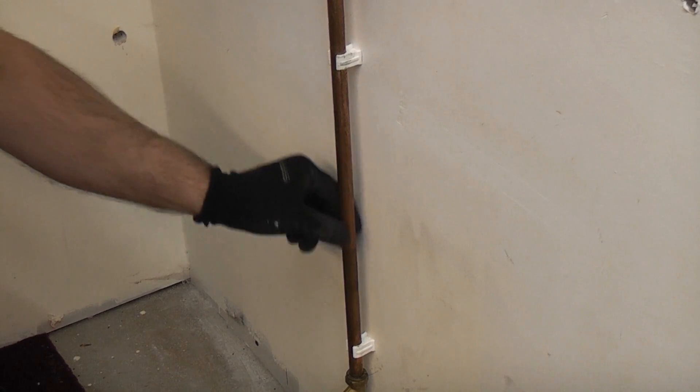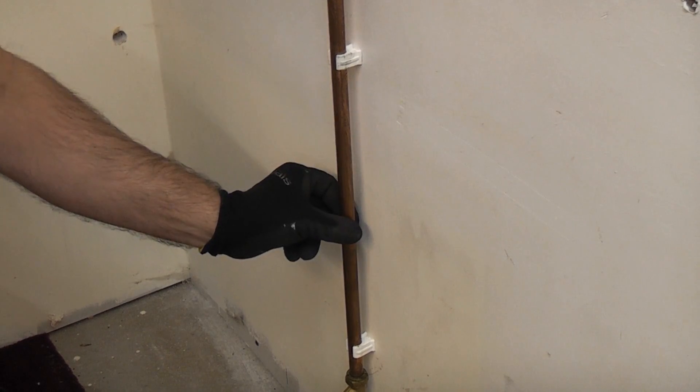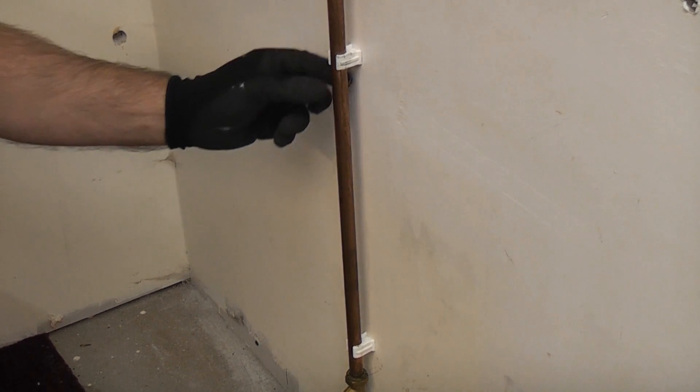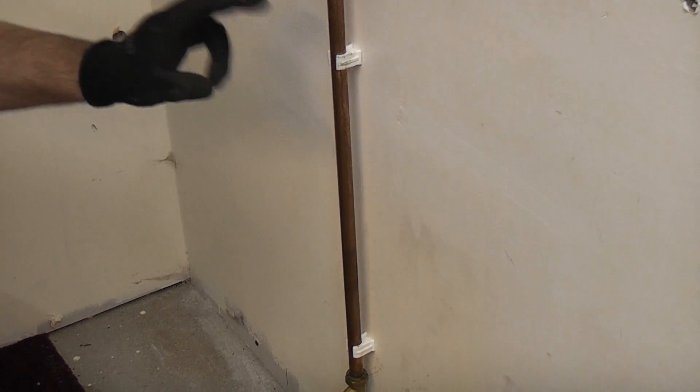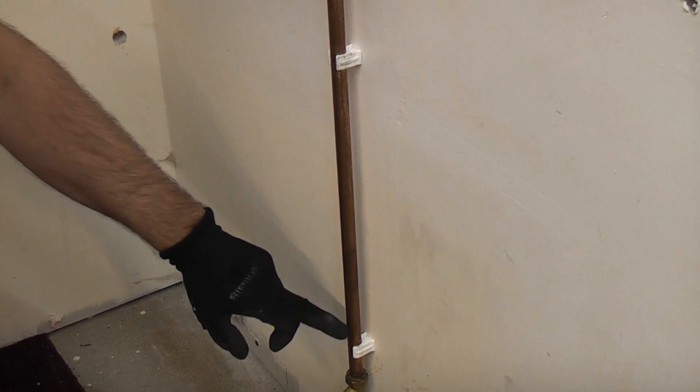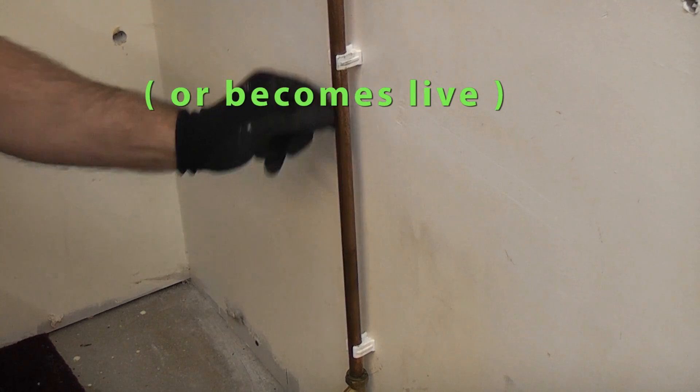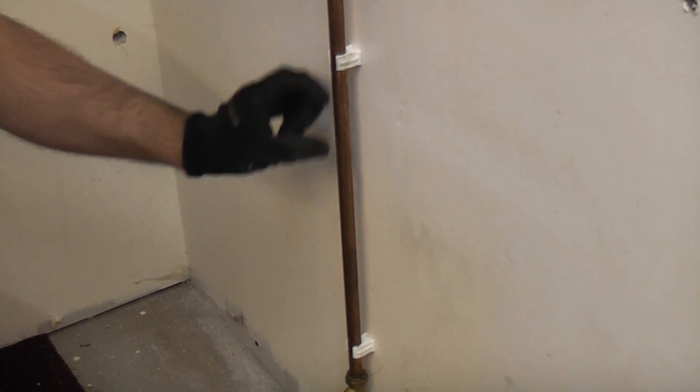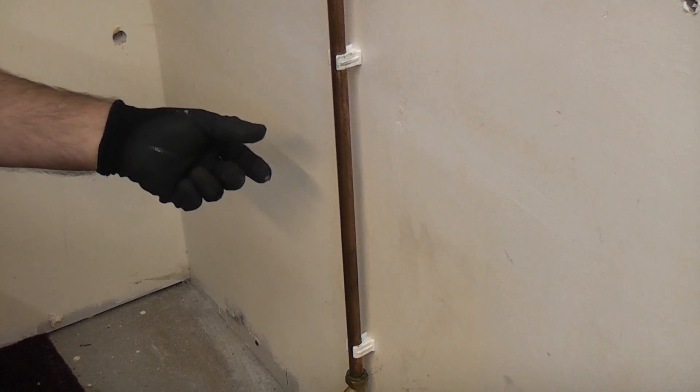The instructions do actually tell you to fit the item first and then put the cross bonding on, but in my opinion it is a better idea to do it first because if that pipe is live and you cut in it, you could be the path to earth. So for that reason I'm going to install the earthing clamps and the earthing wire first.